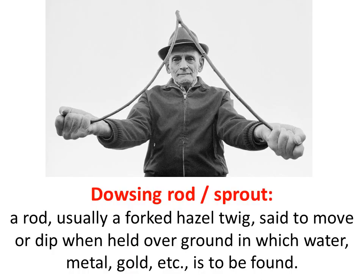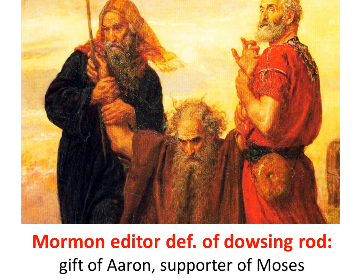Dowsing rod and sprout — these were terms used in the Book of Commandments, which later became the Doctrine and Covenants. The common definition is a rod, usually a forked hazel twig, said to move or dip when held above the ground in which water, metal, gold, etc., is to be found. These words were related to magic and Joseph Smith's early treasure digging, so a Mormon editor in the Doctrine and Covenants redefined 'dowsing rod' as 'the gift of Aaron,' in regard to Oliver Cowdery. So he no longer had the gift of the rod, but the gift of Aaron — who was a supporter of Moses — maybe Joseph was just telling Oliver to be a supporter of him.